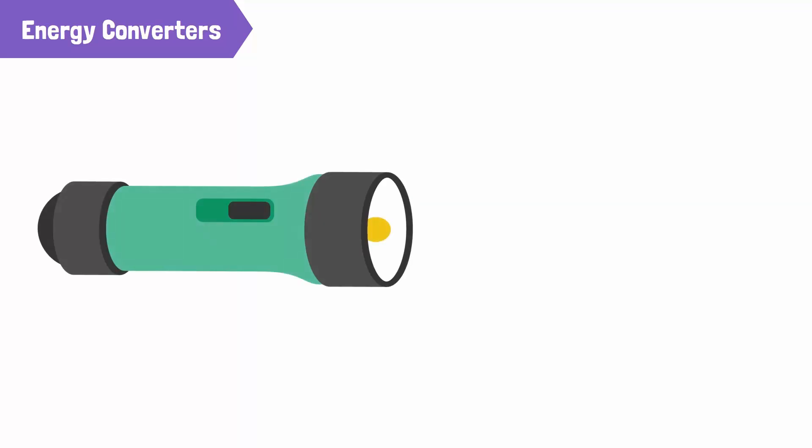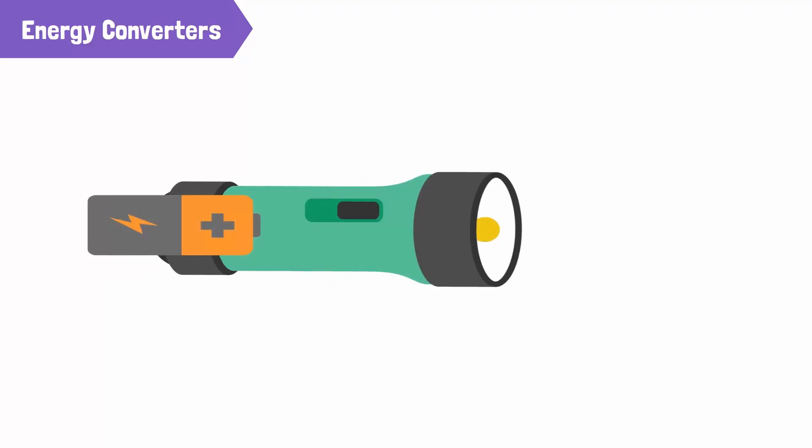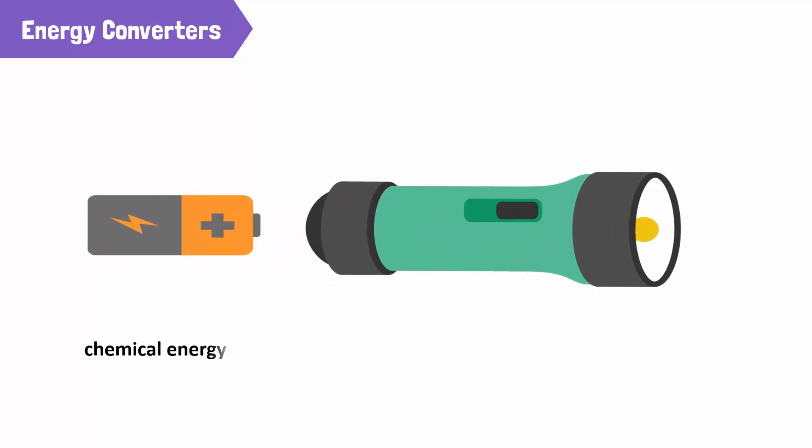There are many other energy converters around us. See this flashlight? It has a battery which is an energy converter. A battery has chemical energy which converts into electrical energy to produce light energy with a flashlight.